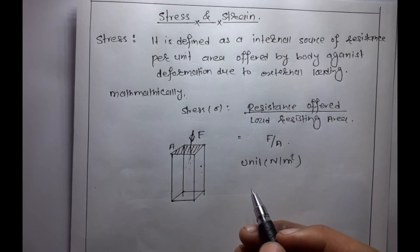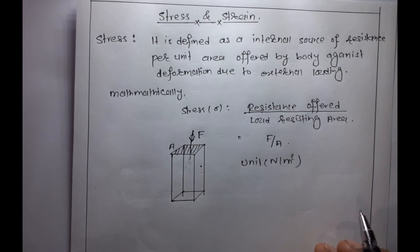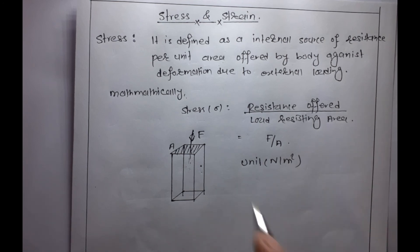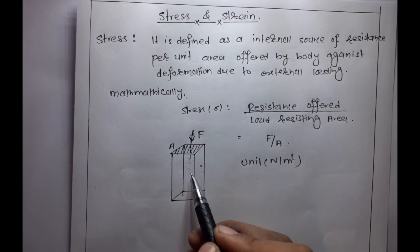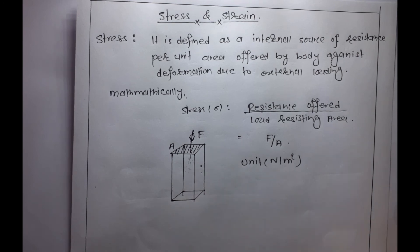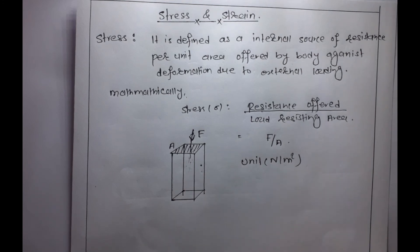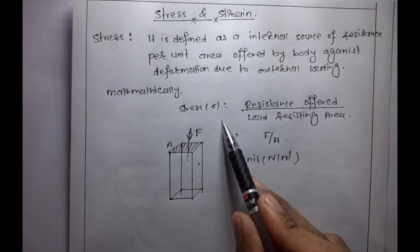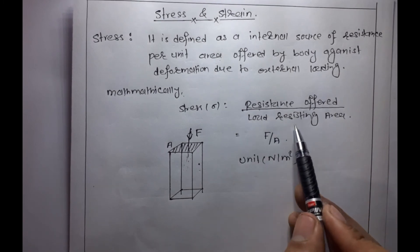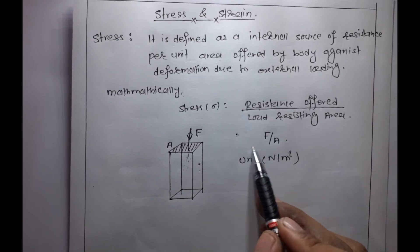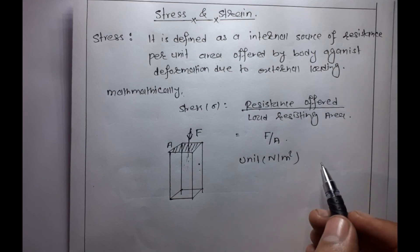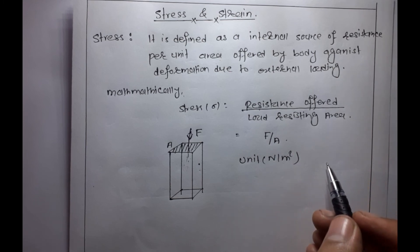This is what happens when you have a load applied — I am going to show you the original position. The resistance offered by the molecules per unit area is defined as stress. Stress is simply resistance offered upon load-resisting area, so F by A. The unit is Newton per meter square, same as pressure.